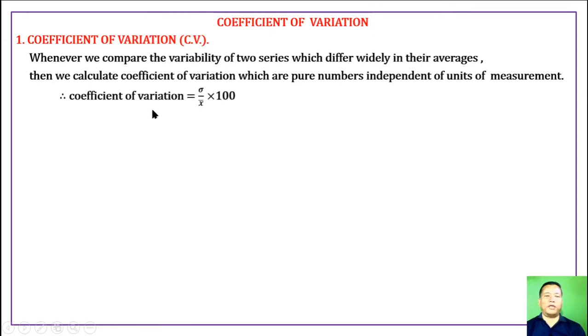Therefore, coefficient of variation is defined as standard deviation sigma divided by mean, that is x bar, into 100.